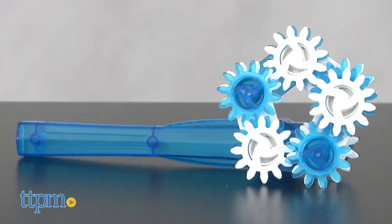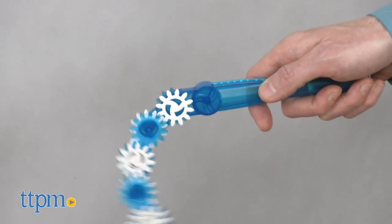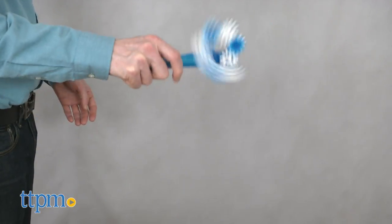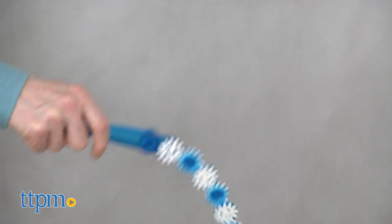Tailspin is a single-player fidget toy for ages 8 and up. We are apparently living in a stressful world, one where not even our phones are enough to scratch this itch. Hence, the market has been flooded with fidget toys of all sorts. The latest contender is Tailspin.